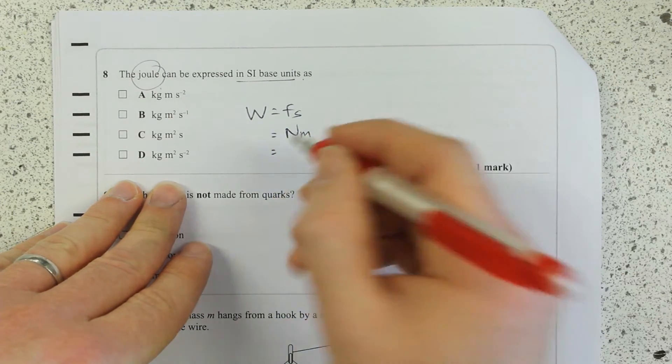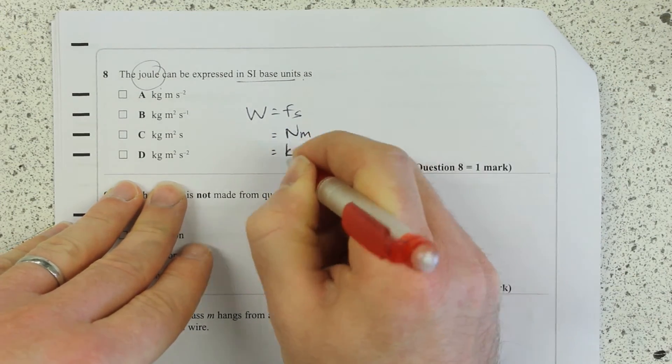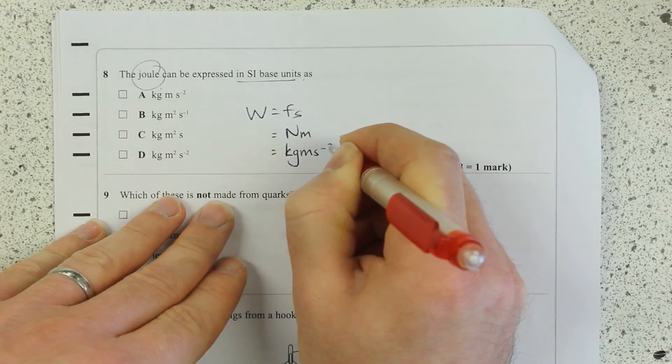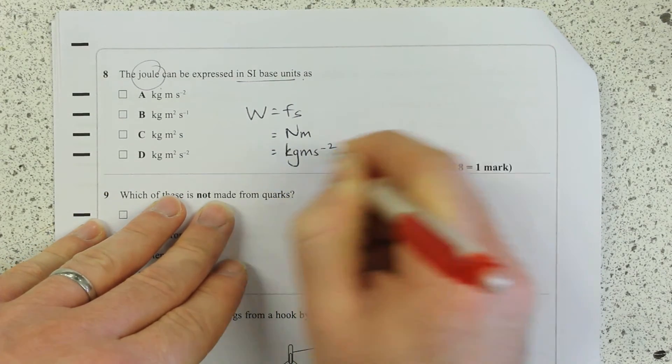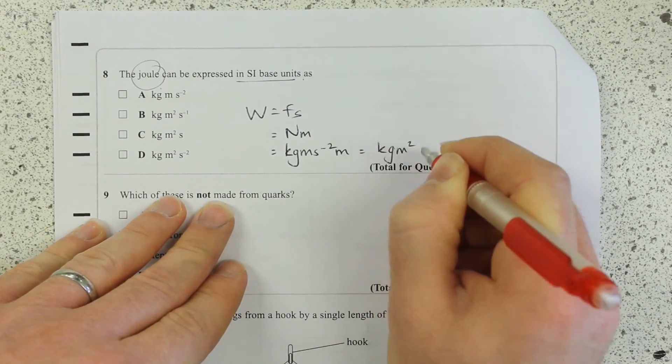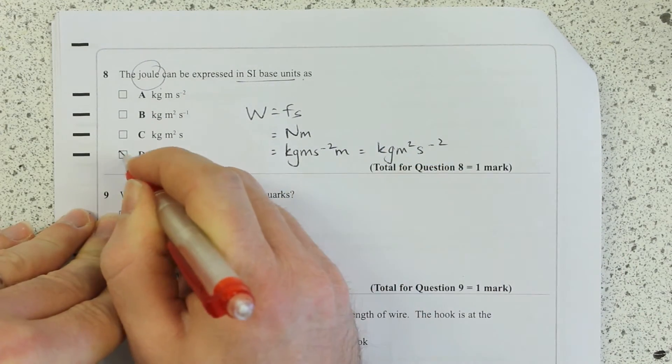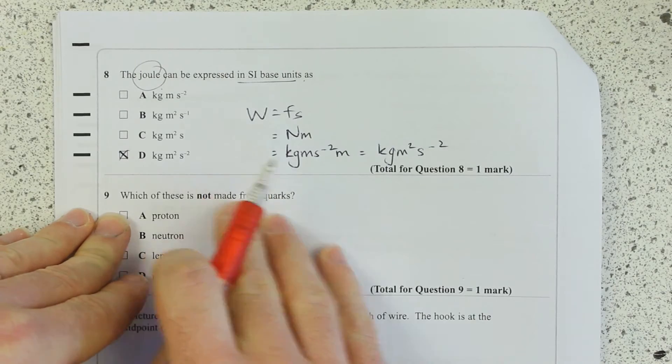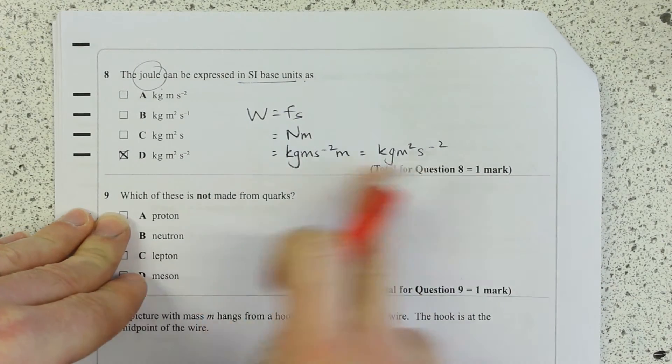Force is mass times acceleration, so mass is kilogram, acceleration is meter seconds minus two, meters again. So just rearrange, rearrange, simplify and I've got that one. It's an absolute key skill. If you cannot take every equation down to base units, you need to practice that.